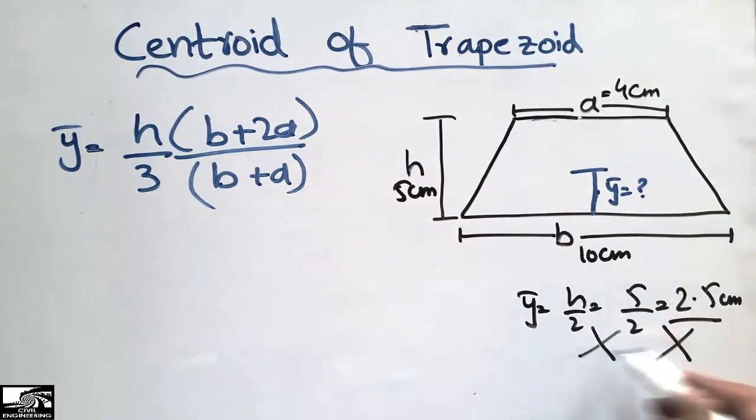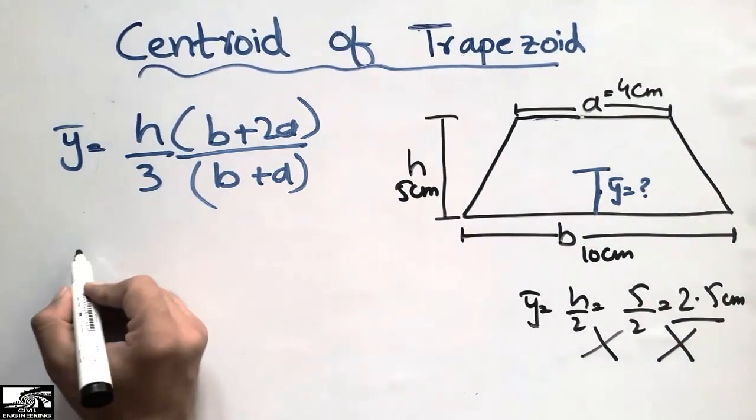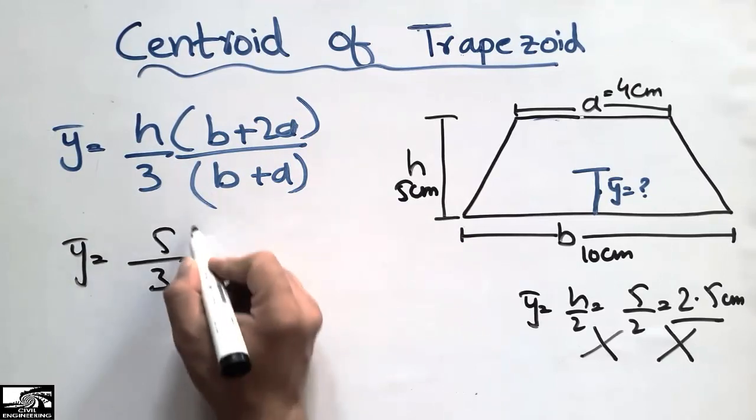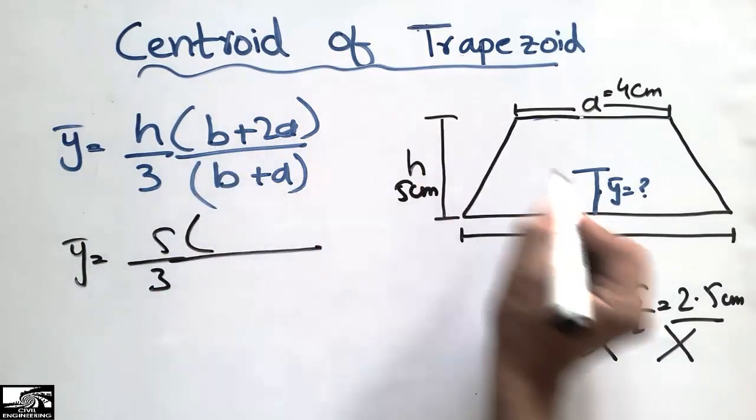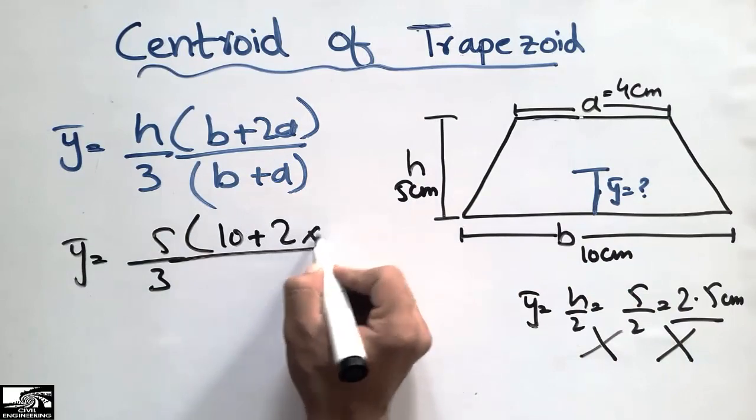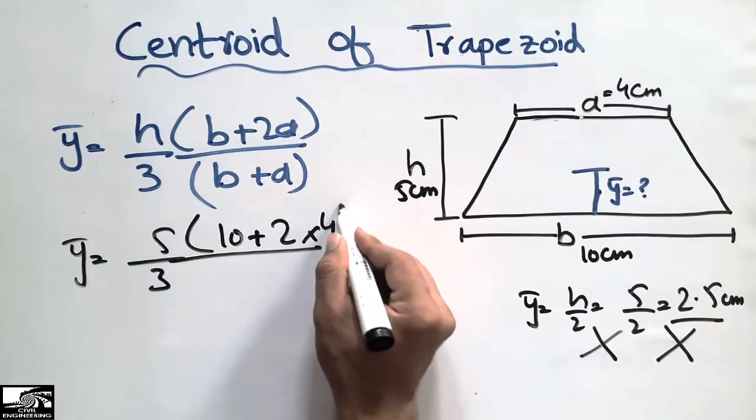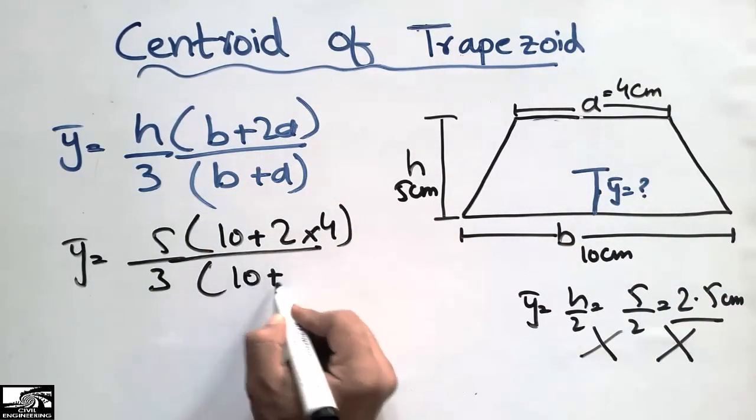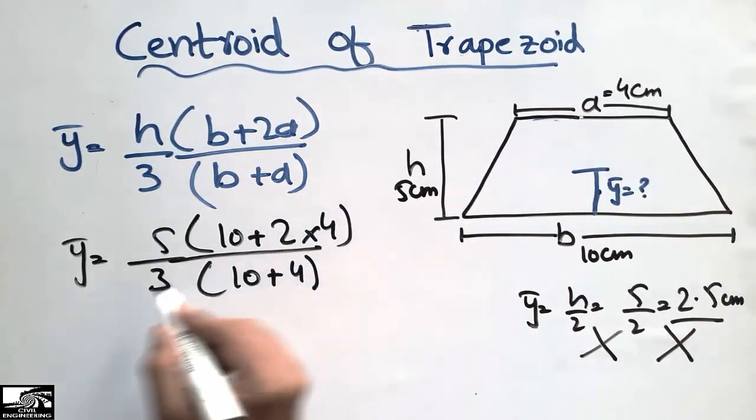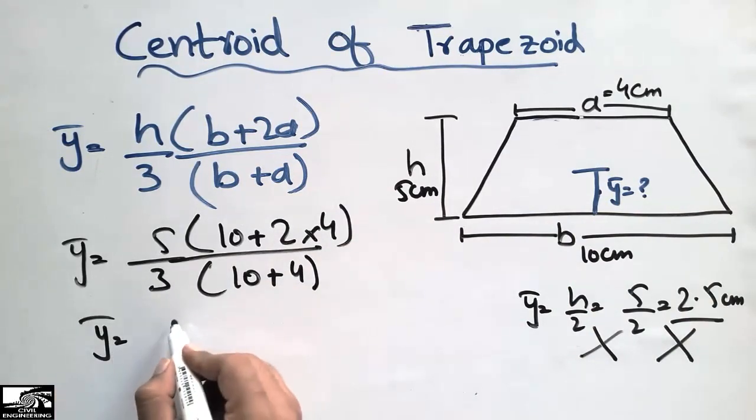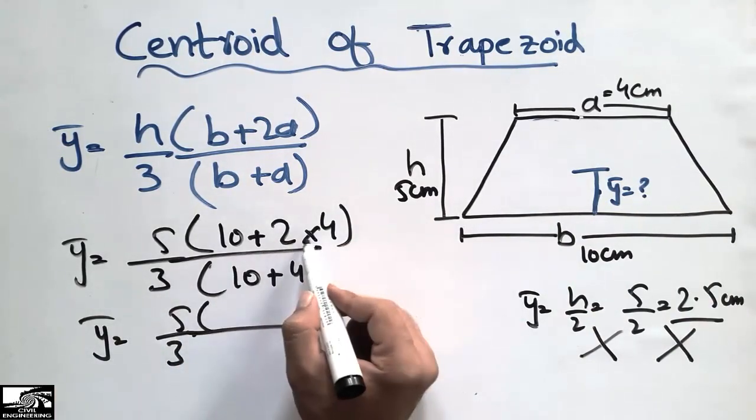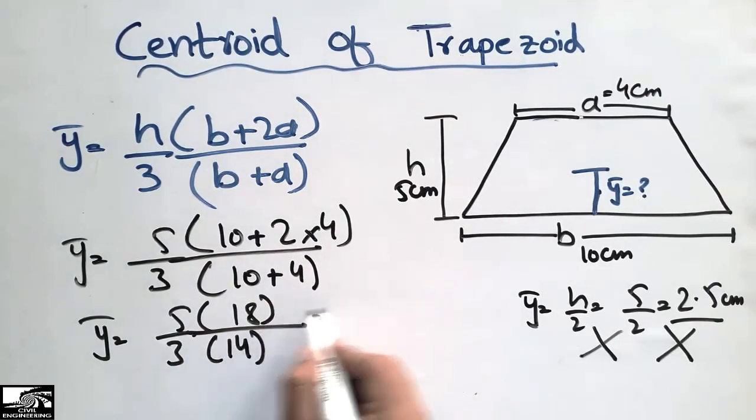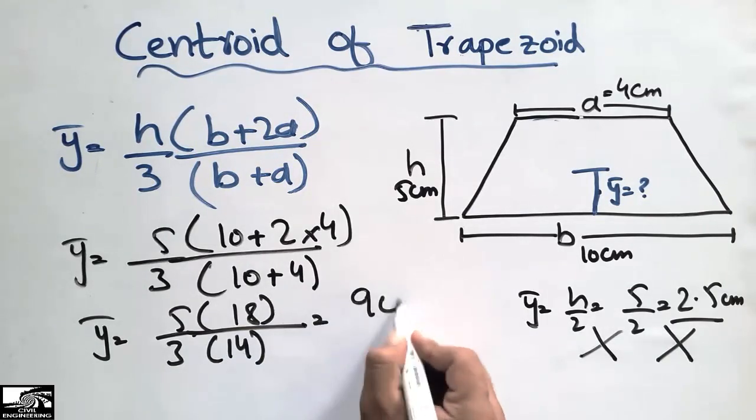We find the centroid by this formula, not by simple ratio like we do in rectangles. So y-bar equals h which is 5 divided by 3, times (b which is 10 plus 2a which is 4), divided by (b which is 10 plus a which is 4). Solving this: 5 by 3 times 18 divided by 14.